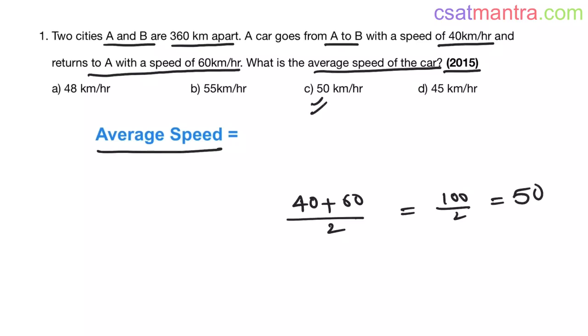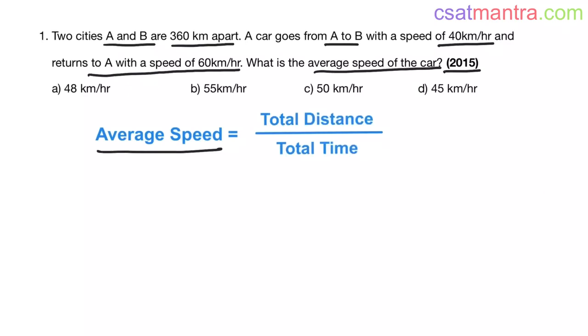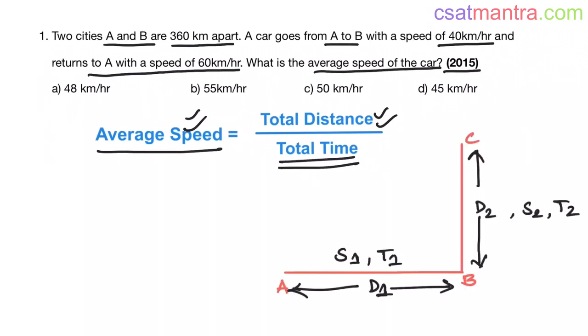But C is not your answer, my friends, because average speed equals total distance by total time. Say you have three points A, B, and C.